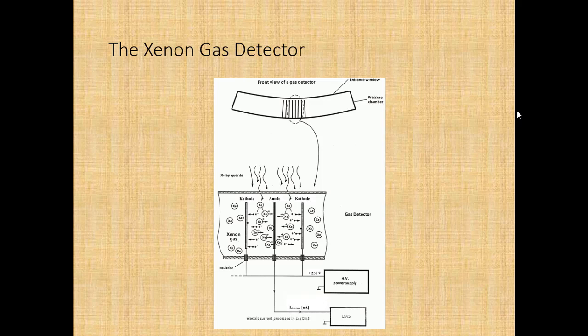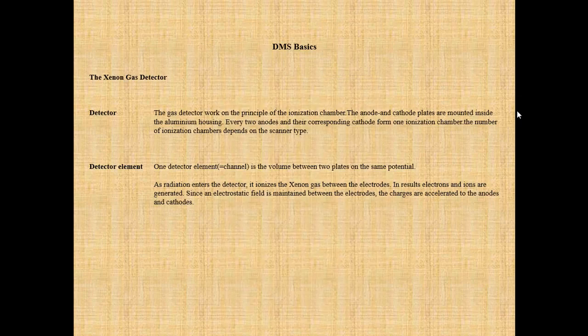The xenon gas detector works on the principle of the ionization chamber. The anode and cathode plates are mounted inside an aluminium housing; every two anodes and their corresponding cathode form one ionization chamber. The number of ionization chambers depends on the scanner type. One detector element equals one channel, which is the volume between two plates at the same potential. As radiation enters the detector, it ionizes the xenon gas, generating electrons and ions that are accelerated to the anodes and cathodes by the electrostatic field.